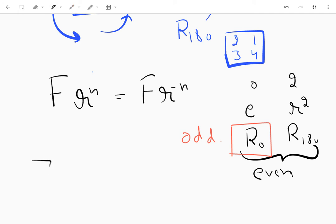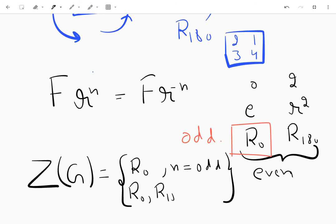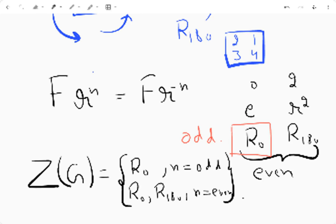So what we can say is that the center of a dihedral group consists of r_0 when n is odd, and r_0 and r_180 when n is even. I hope this is clear, but if you have any doubts, just ask me in the comments.